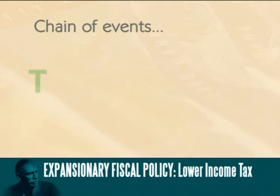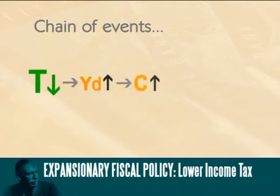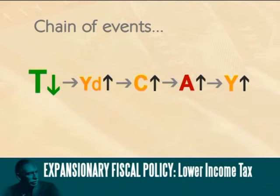It's the multiplier effect at work all over again. In terms of an events chain, which shows what factors cause others to change, the impact of lower taxation can be described as follows. Lower tax means people have more disposable income, so consumption spending rises, increasing total spending in the economy. Firms respond by producing more, and so income increases. Again with the help of the multiplier, this generates more spending, output, and income.